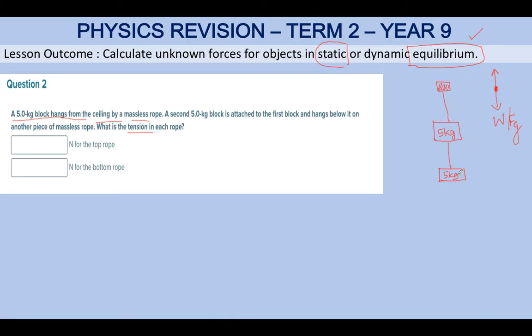The first rope should hold both objects, so the tension T1 will be much greater than the tension in the second rope. How do we find the tension for the top rope? T1 will be equal to the weight pulling it down: weight of the first block plus weight of the second block. So T1 = W1 + W2.